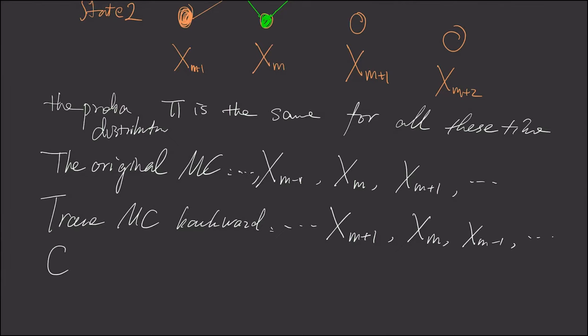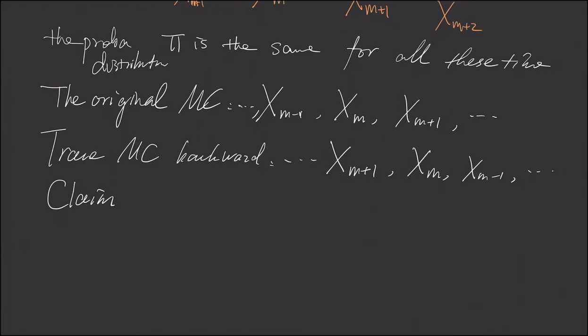And here is our claim. Let me define the following Markov chain, which is a backward stochastic process. This stochastic process is also a Markov chain.